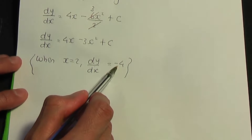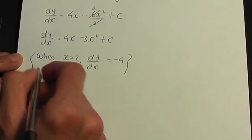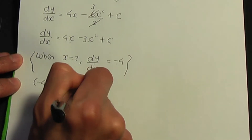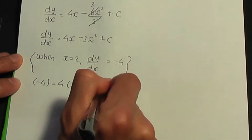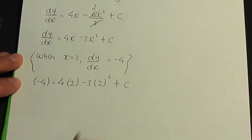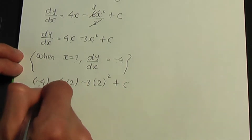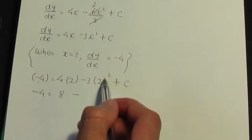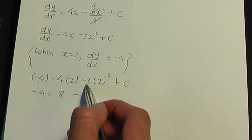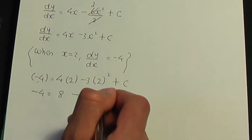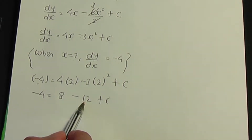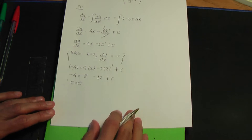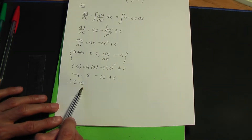Replacing dy/dx with minus 4 and x with 2 in our equation: minus 4 equals 4 times 2 minus 3 times 2² plus c. Rearranging, 8 minus 12 is minus 4, so the c value is 0.